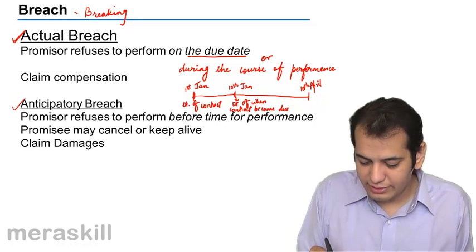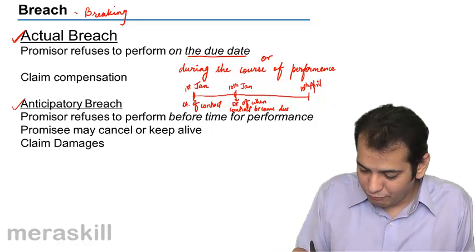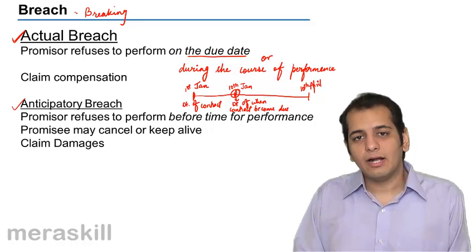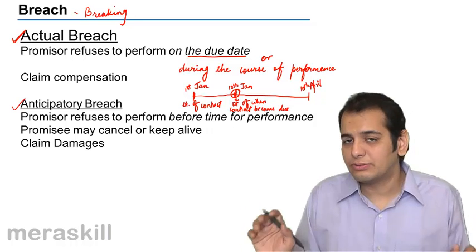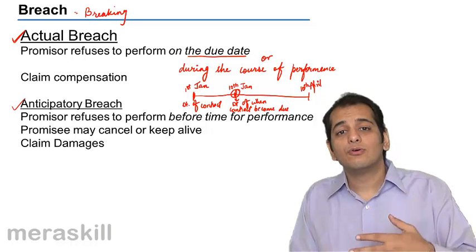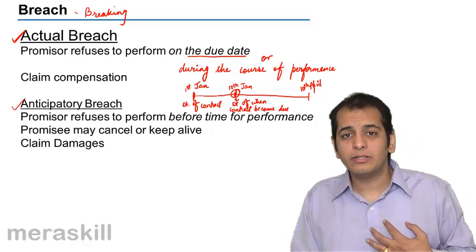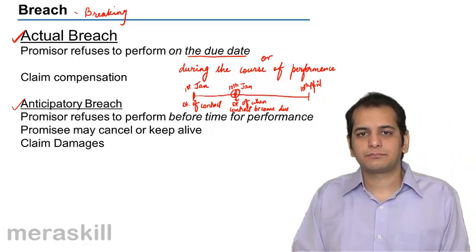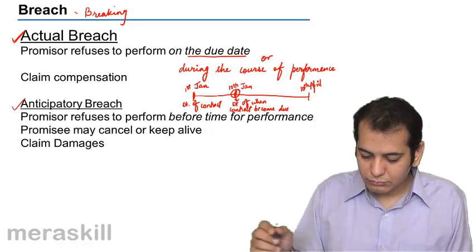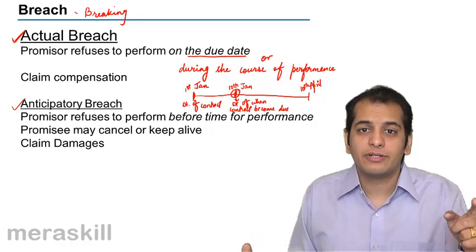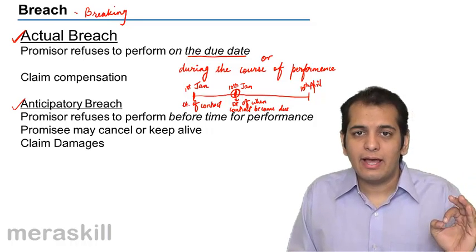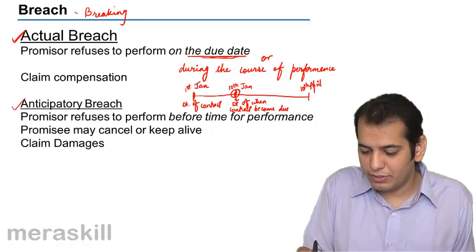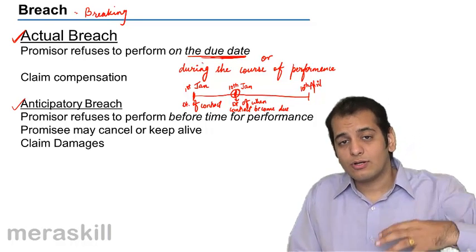We entered into a contract on 1st Jan, and the performance is due to start on 10th Jan. Now if on 10th Jan I come to you and say I cannot construct the house for you — please look for some other contractor — I am breaching the contract we entered on 1st Jan. I am refusing to perform on the due date, 10th Jan. This would be called actual breach of the contract, because I am refusing to perform on the due date, when the contract was due to perform.